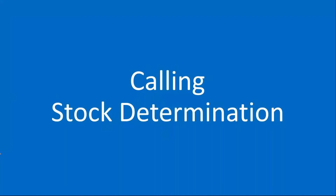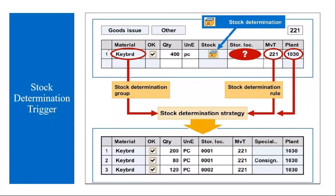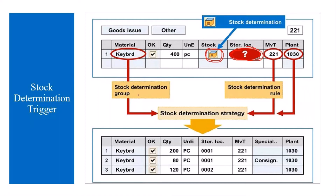Let's understand how to trigger stock determination. In the MIGO transaction when you do a goods issue, you enter the material, quantity, movement type, and plant. Once you enter this information, you will find a button called 'Stock Determination.' When you click on this button, the system automatically performs stock determination based on settings such as the stock determination group and stock determination rule, and proposes storage locations automatically.